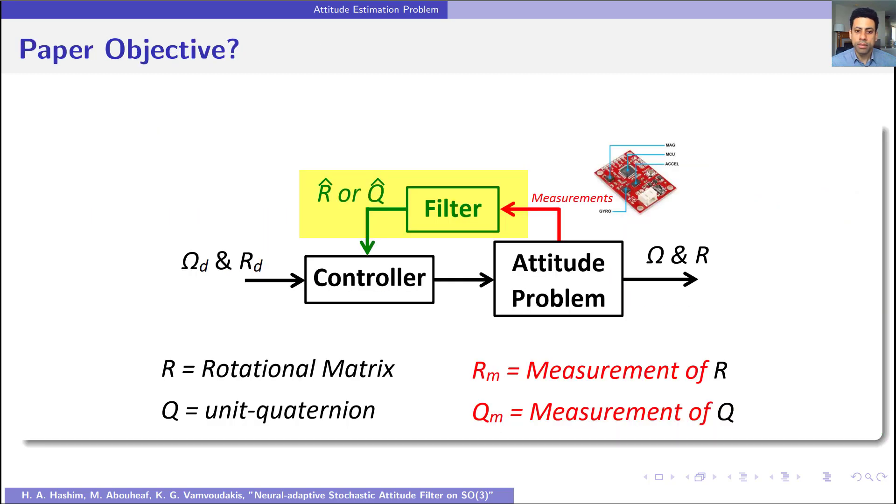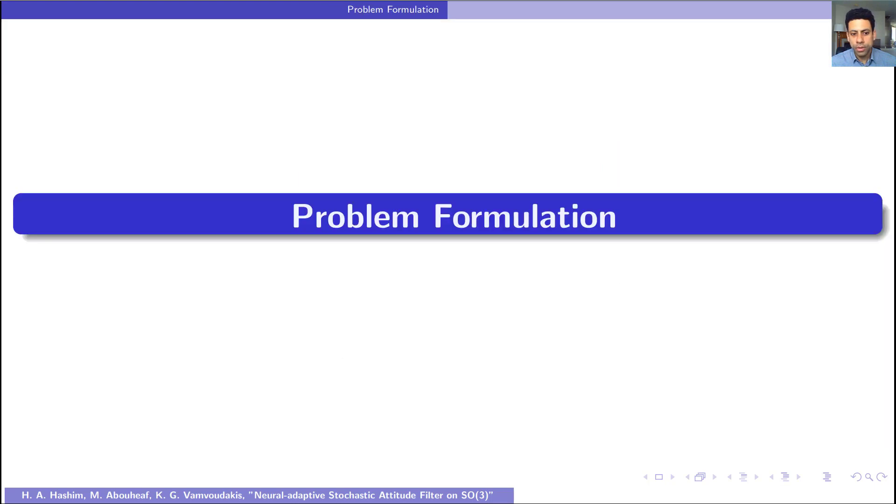The following diagram illustrates our research objective. Our objective is to design a filter that provides good estimation results given measurements obtained from low-cost measurement units. Now let us move to the problem formulation.